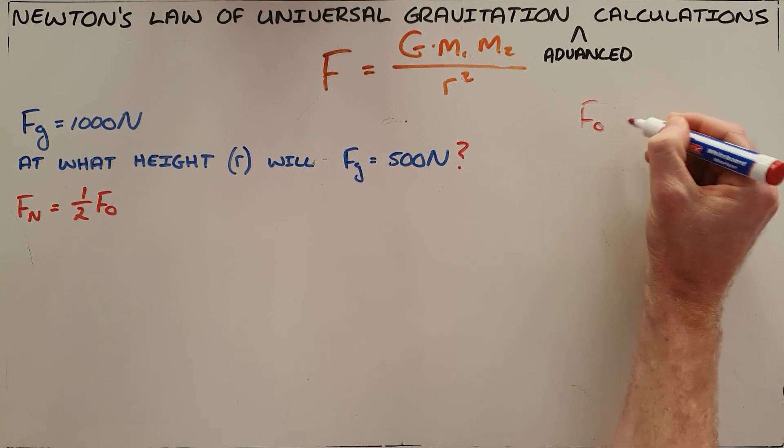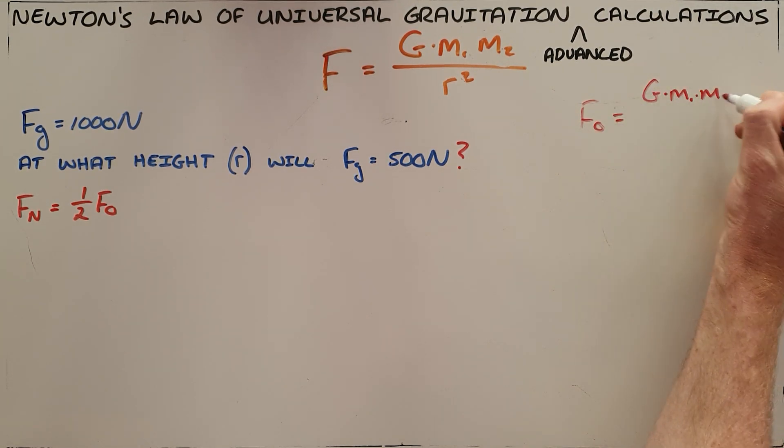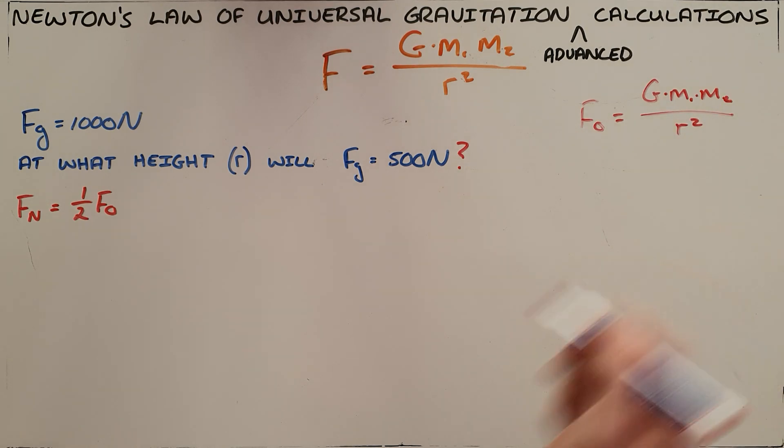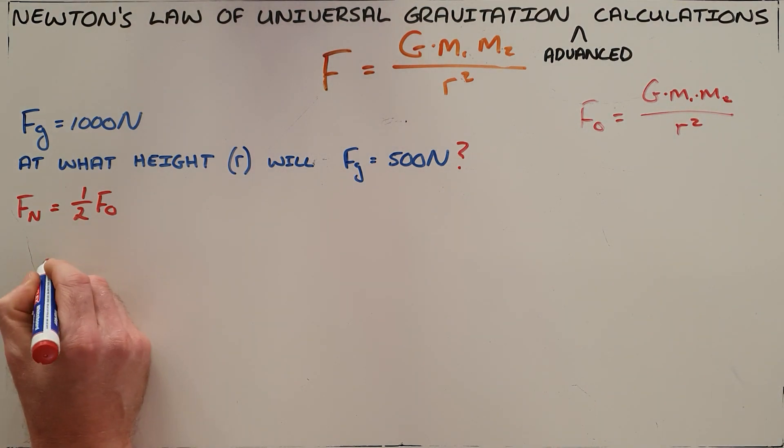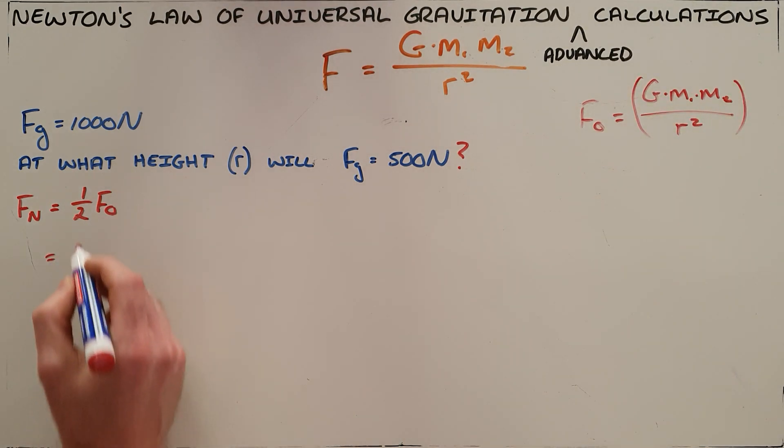Now we can go back by saying that we know that the original force was just the gravitational constant multiplied by the product of the two masses over the distance between their centers squared: F = G·m₁·m₂/r². We can substitute that term in for our original force, which says that one half is now equal to G·m₁·m₂/r².